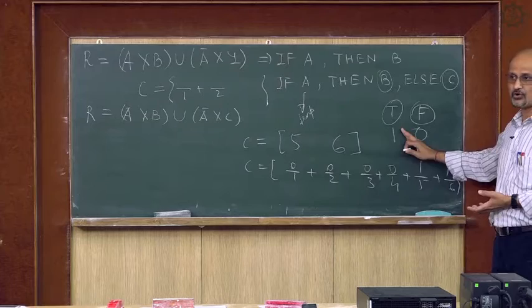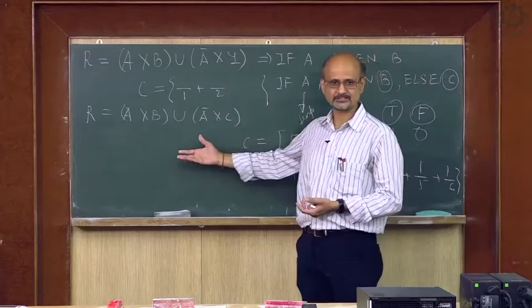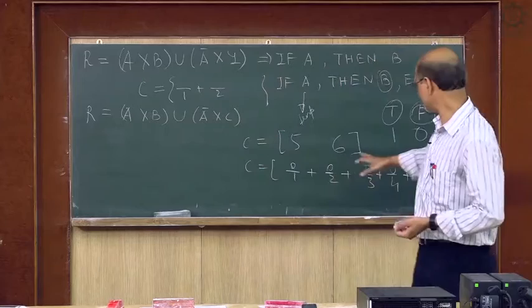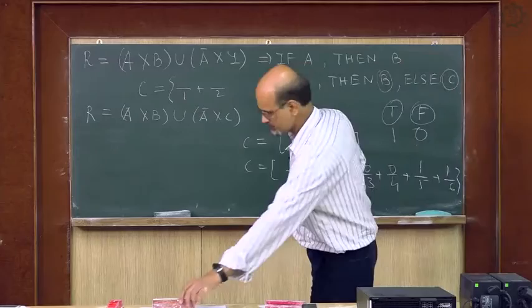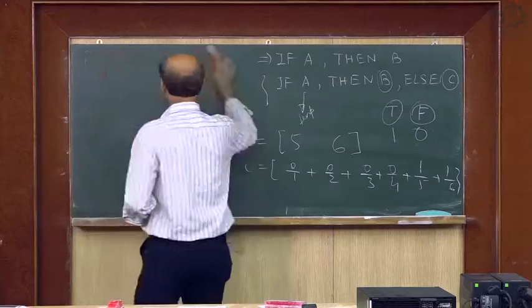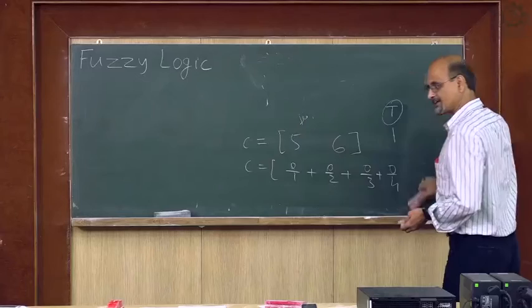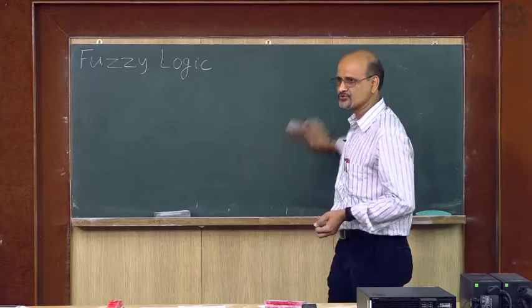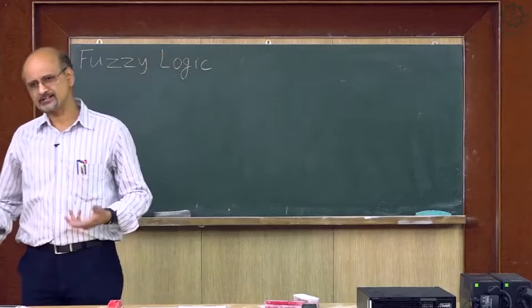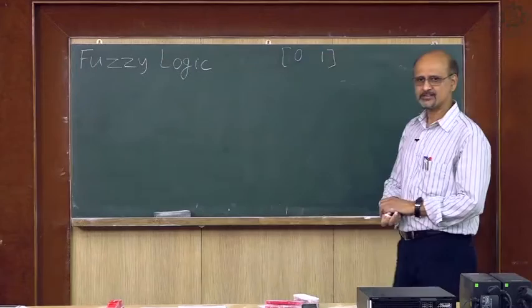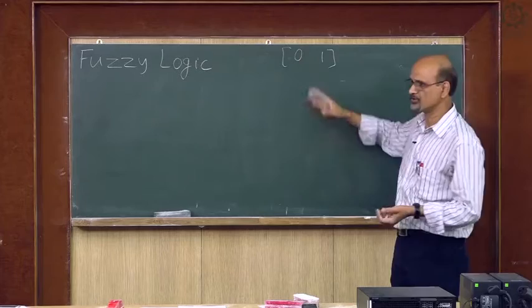That means an element either belongs to A or does not belong to A, belongs to B or not — these we have done in classical logic, as we did for classical sets and fuzzy sets. Here also, we can extend this classical logic to fuzzy logic. The values 0 and 1 are the characteristic function values with respect to classical set theory.